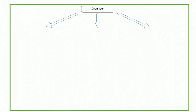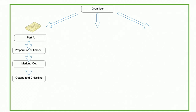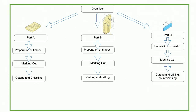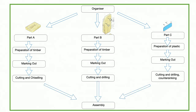The manufacture of the organizer can be classified according to the different parts that make it up, starting with Part A, which will require preparation of timber, marking out, then cutting and chiseling. Part B will go through preparation of timber, marking out, then cutting and chiseling. Part C will need the preparation of plastic, marking out, then cutting, chiseling and countersinking. Afterwards, all three parts will be assembled together.